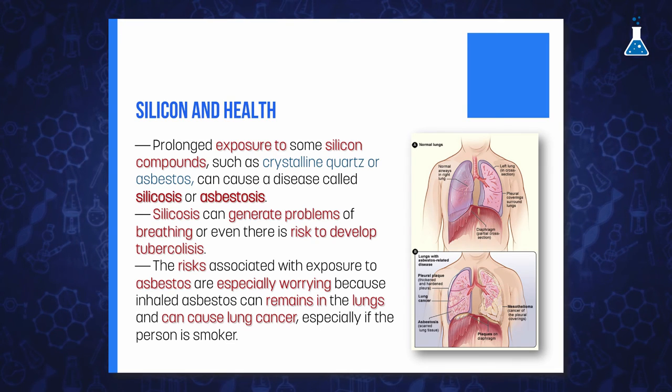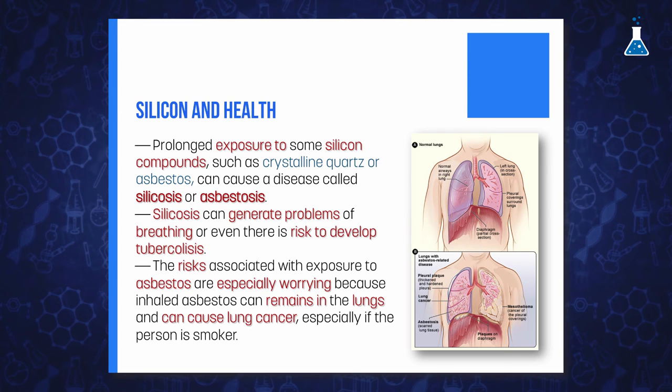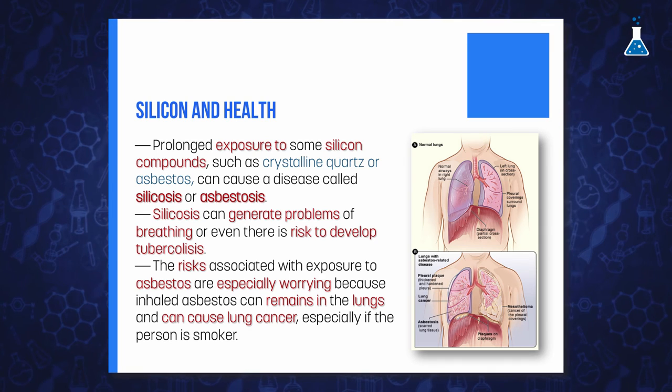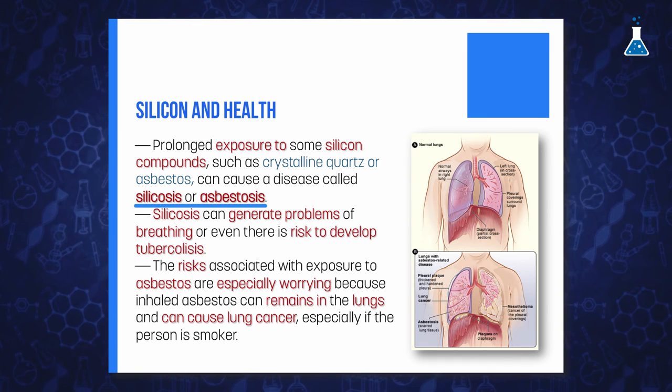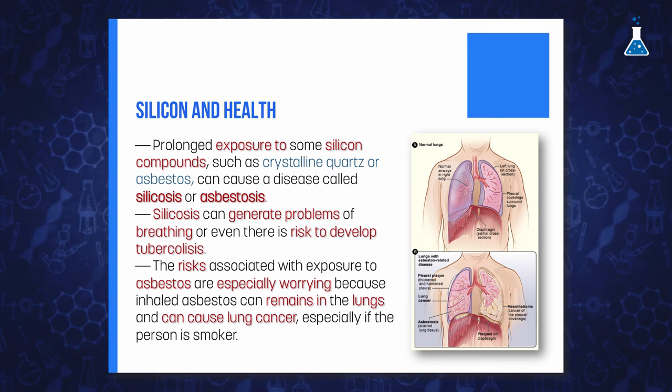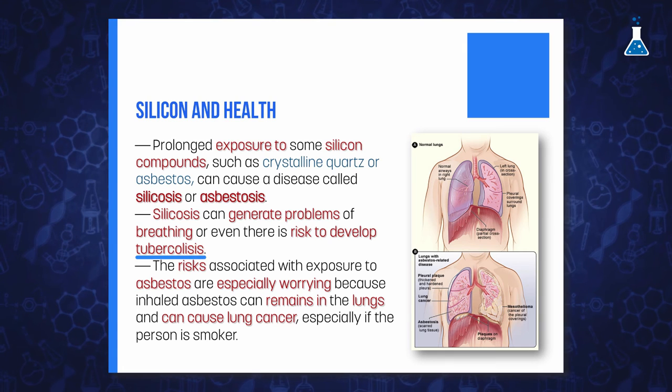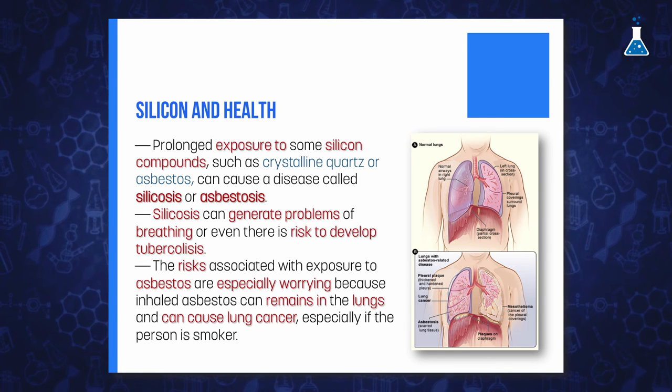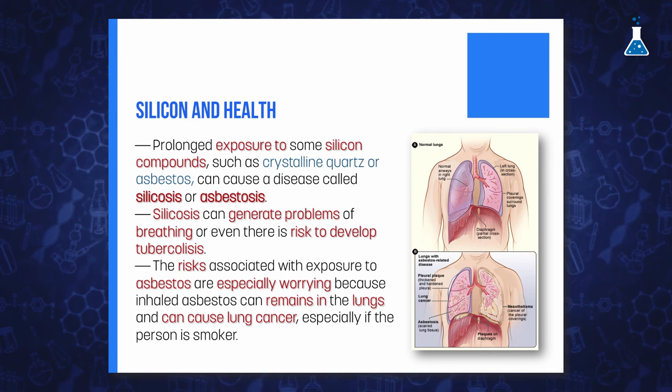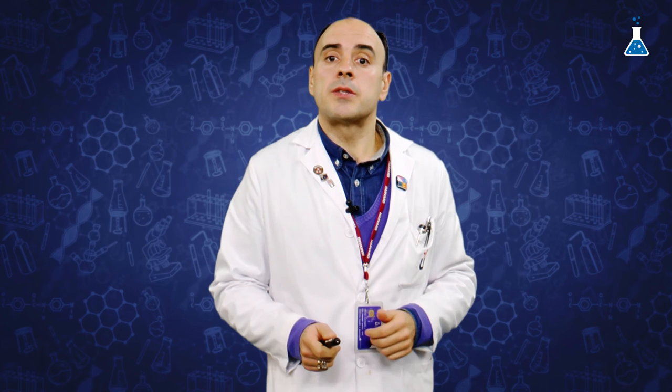Although silicon is a very important element in our lives, it is noteworthy that prolonged exposure to some of its compounds, such as crystalline quartz or fibrous silicates such as asbestos, can cause diseases called silicosis or asbestosis. These diseases cause breathing problems and carry a high risk of developing tuberculosis. The use of asbestos for heat insulation and fire resistance has been especially worrying, as inhaled asbestos can remain in the lungs for long periods. Smokers exposed to asbestos have a greater tendency to develop lung cancer than unexposed smokers.